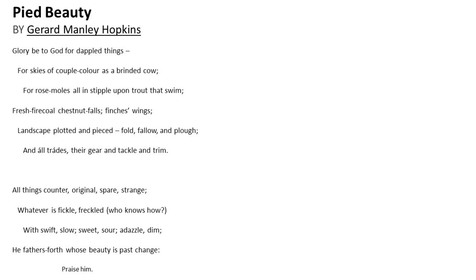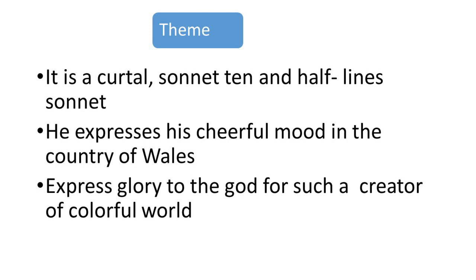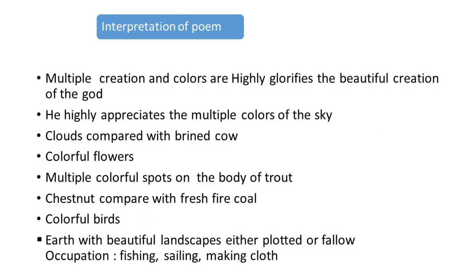Please go through the lines yourself. The first line is essentially the theme of the poem. It is a curtal sonnet because it has only ten and a half lines. Hopkins expresses his cheerful mood in the country of Wales. The most important thing he conveys is that he expresses glory to God as the creator of this colorful world, which he highly appreciates.